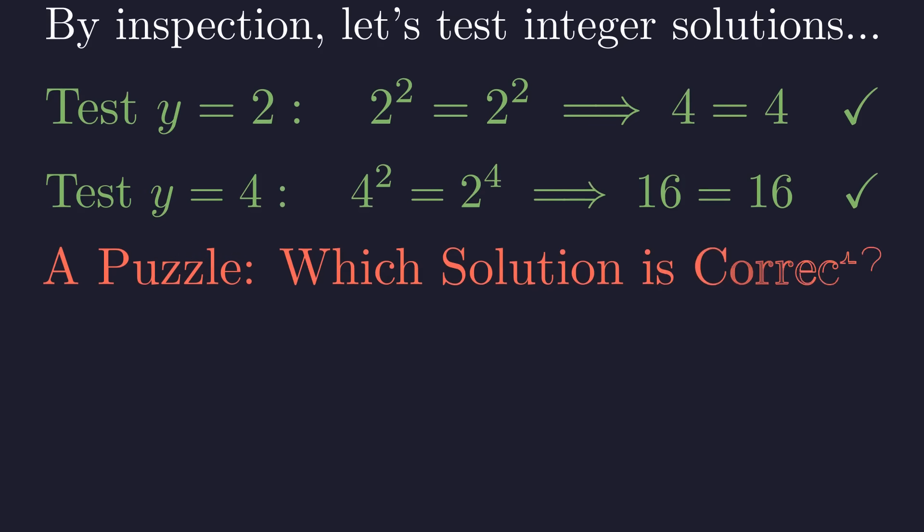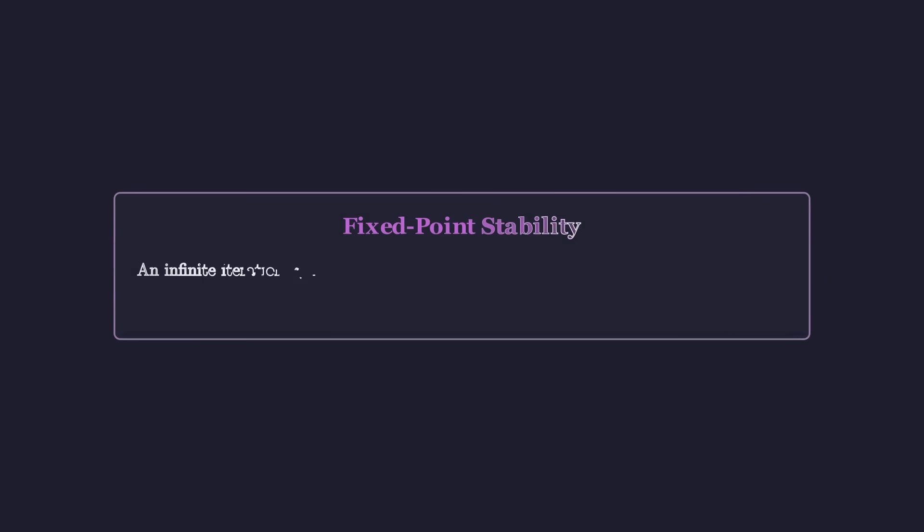This presents a logical problem. A single expression cannot have two different values. Is the answer 2 or is it 4? To resolve this, we must introduce the concept of stability. Our infinite tower is a sequence defined by iteration. Such a sequence can only converge to a stable fixed point.